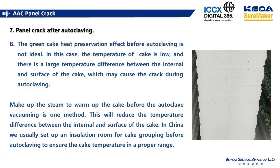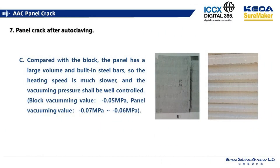In China, we usually set up an insulation room for panel cake grouping before autoclaving to ensure the cake temperature is in a proper range. Compared with blocks, panels have a larger volume and contain steel reinforcement, so the heating speed is much slower and causes cracking. In this case, we should also consider controlling the vacuum pressure during autoclaving.